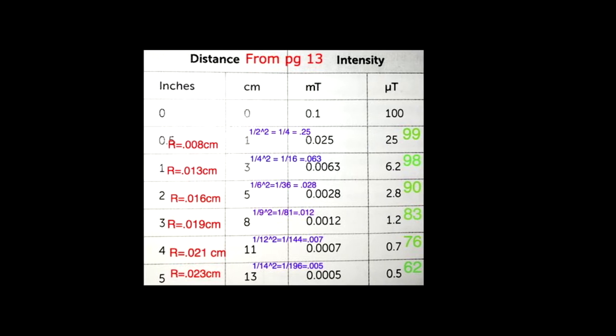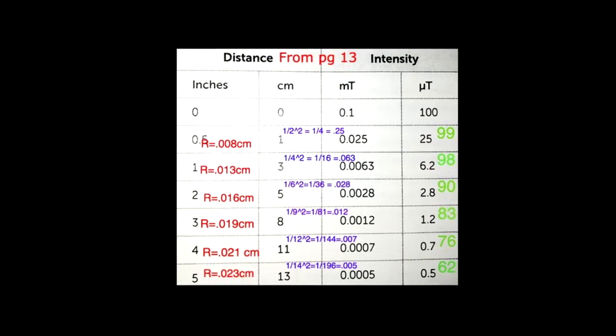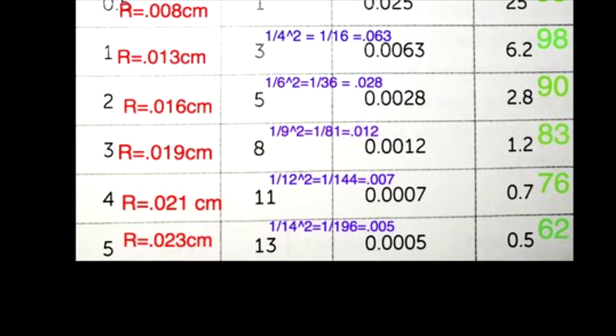Now, I want to call your attention to this chart in Dr. Pollack's book, and look at 5 inches away. You can see that the answer is 0.5 microtesla. Compared to 62, that's just way, way off.